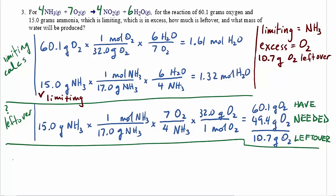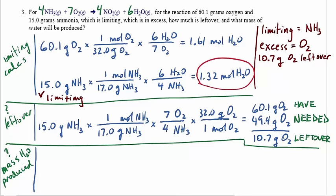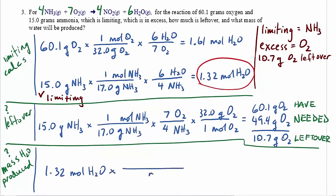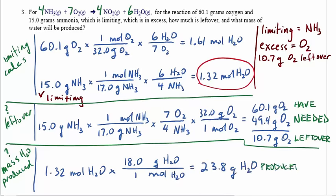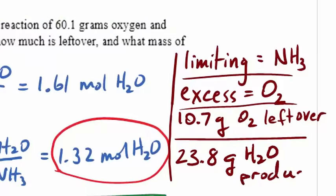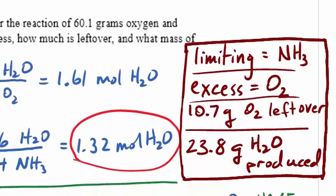The last question is the amount of water produced. We've already calculated 1.32 moles of H₂O from the limiting reactant, so we simply convert that to grams. That tells us 23.8 grams of water will be produced, and that answers all the questions in the problem.